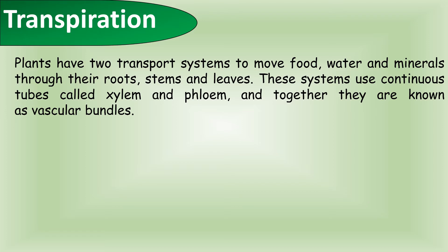Plants have two transport systems to move food, water, and minerals through their roots, stems, and leaves. These systems use continuous tubes called xylem and phloem, and together they're known as vascular bundles. It's important to remember that xylems play a crucial role in interacting with phloem to help control the concentration of sucrose within them.